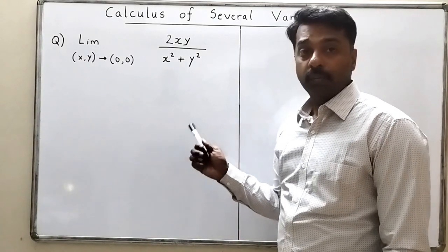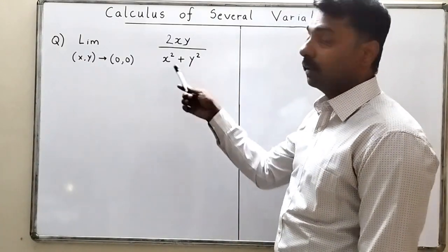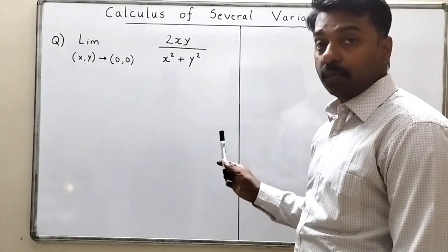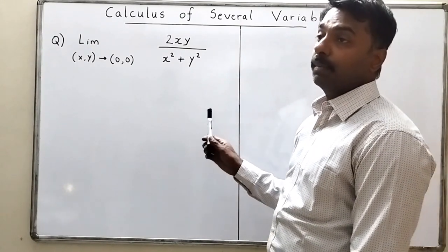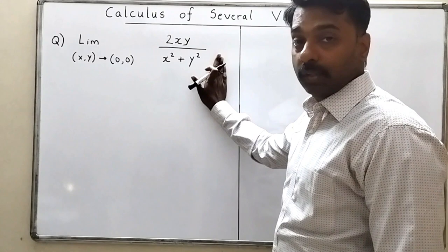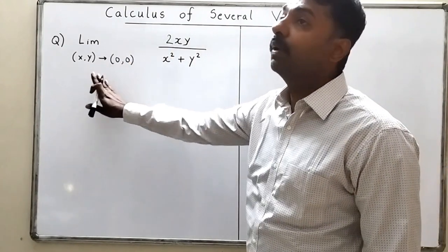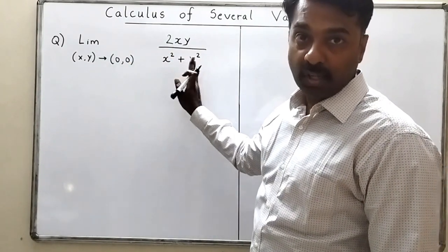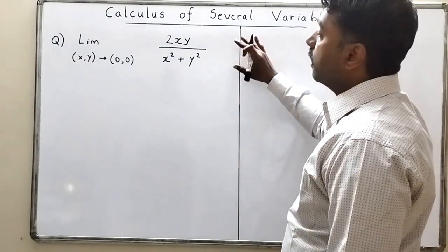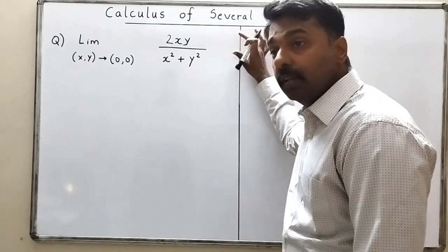In this video we are going to explore simultaneous limits. In the previous video we discussed repeated limits, and now we are going to discuss simultaneous limits. Whenever you get such a limit, firstly you should observe something in the given function and then start the evaluation process.